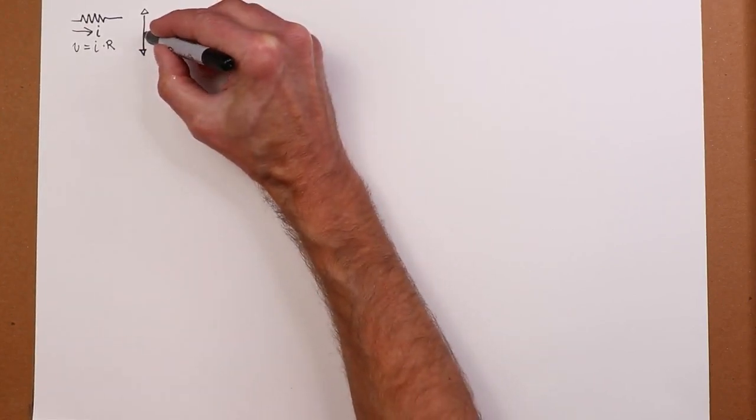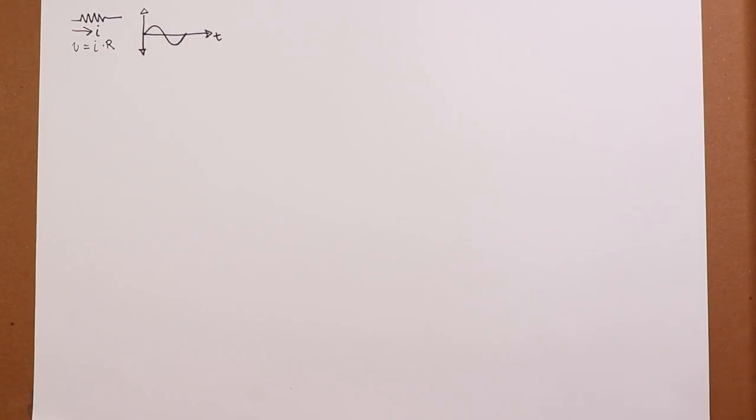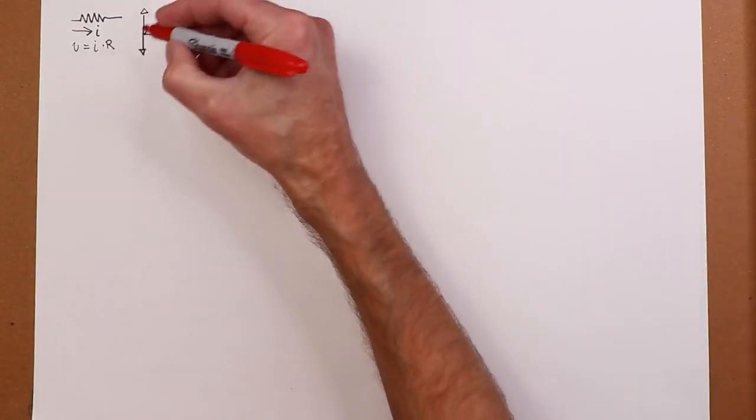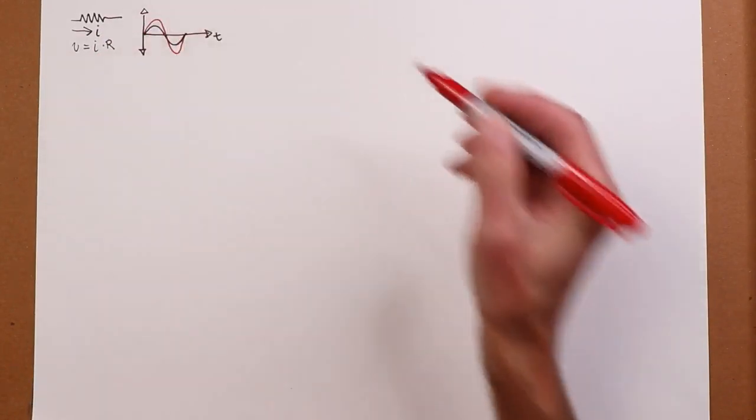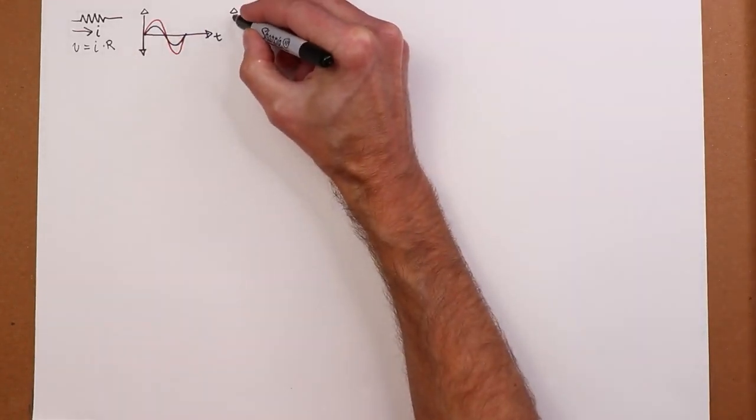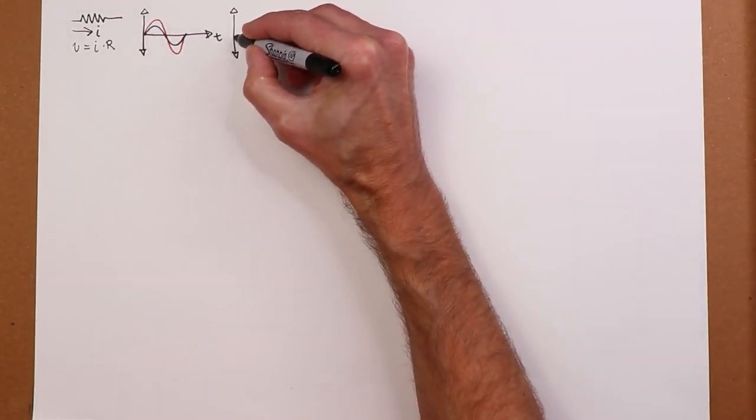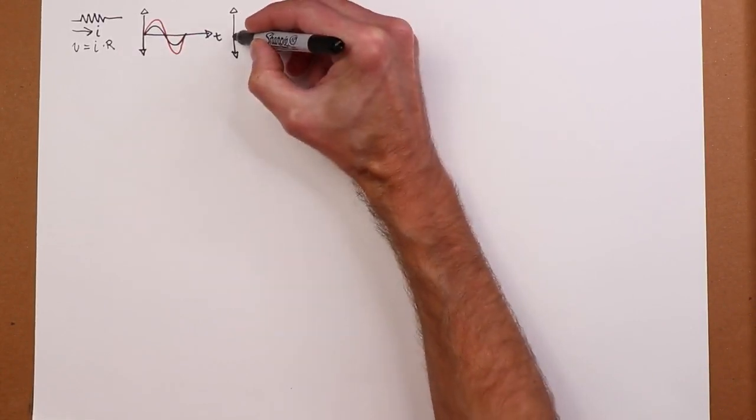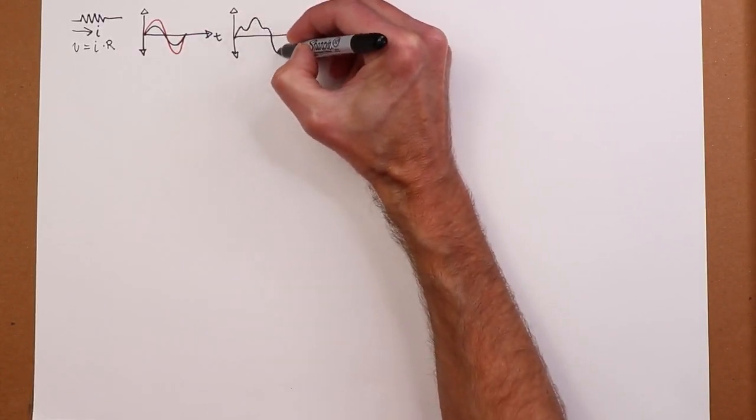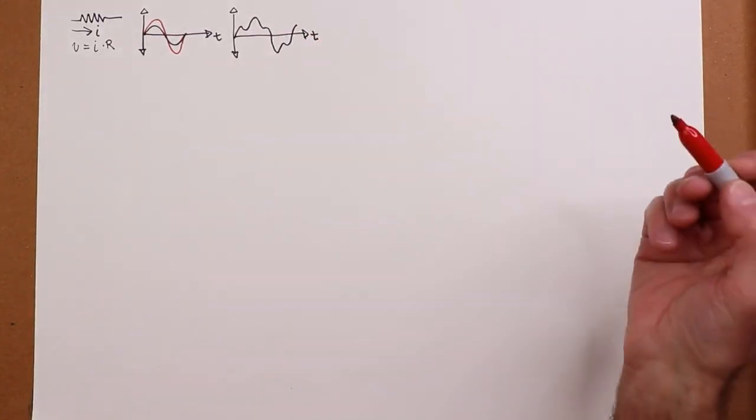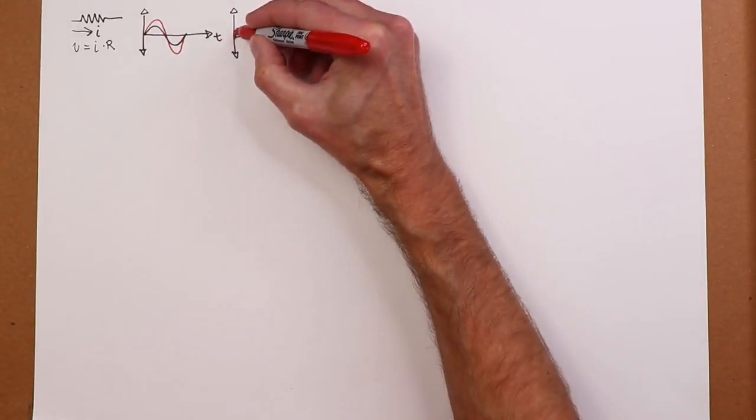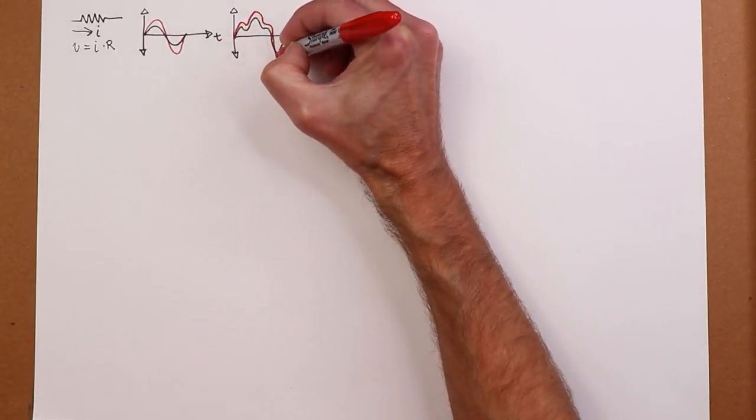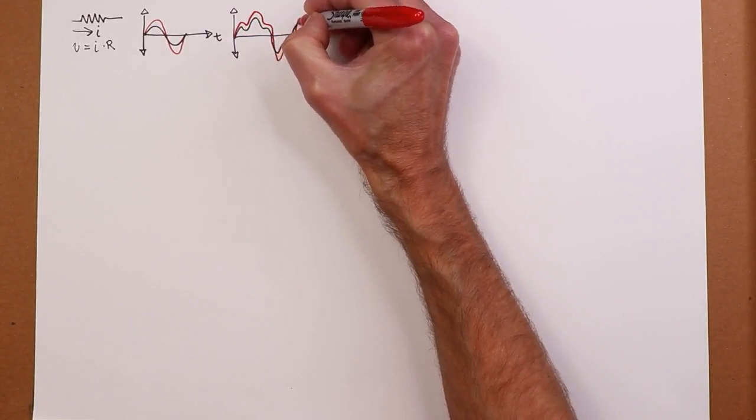So if I have a current waveform that looks like this, the voltage waveform is simply scaled by the value of R. So it might be bigger, it might be smaller, but it's the same shape. And if we had maybe a more complicated waveform like we would get from music or voice, some funky-looking waveform, the same thing will be true. It always tracks it because R is just a proportional value here. I'm just drawing it larger just so it's easier to see.